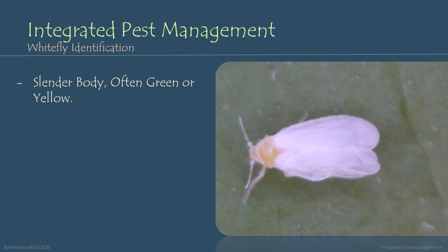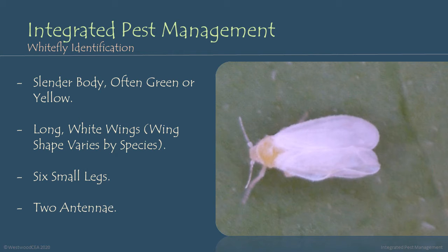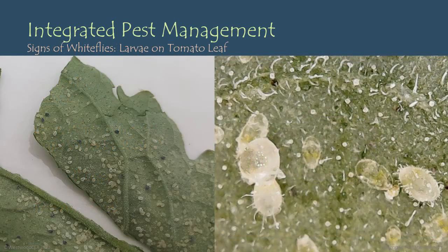Whiteflies have very slender bodies that are often green or yellow. Additionally, they have long white wings, and the wing shape varies by species. Whiteflies have six small legs and two antennae.